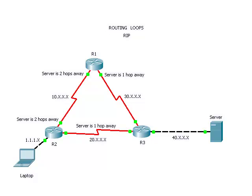Router 1 advertises to Router 2 that it knows of a way to get a packet to the server network in two hops. Likewise, Router 2 advertises to Router 1 that it knows how to get the packet to the server network in two hops.